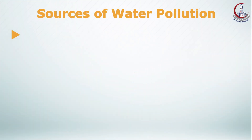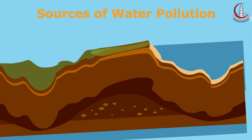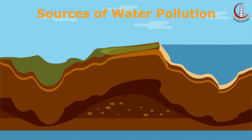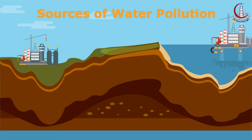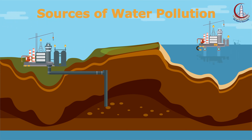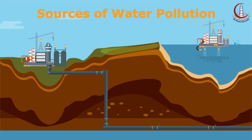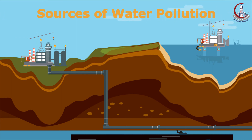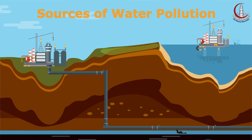Underground storage and tube leakage may also lead to water pollution. Many liquid products such as petroleum products are stored in metal and steel tubes underground, and other sewage systems run in underground tubes. Over time, they rust and begin to leak. If this happens, they contaminate the soil and the liquids in them end up in many nearby water bodies.